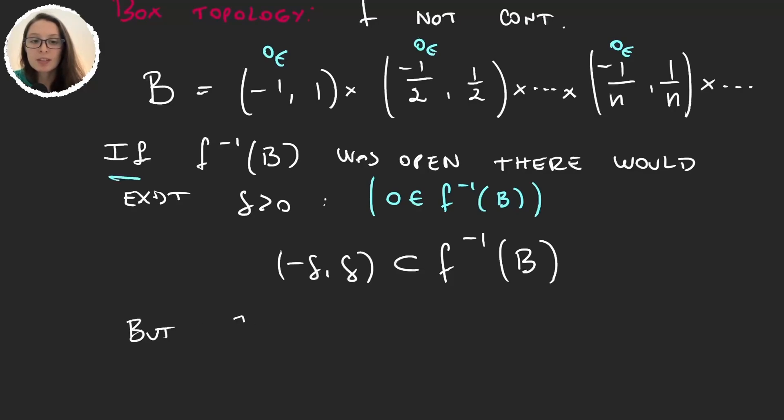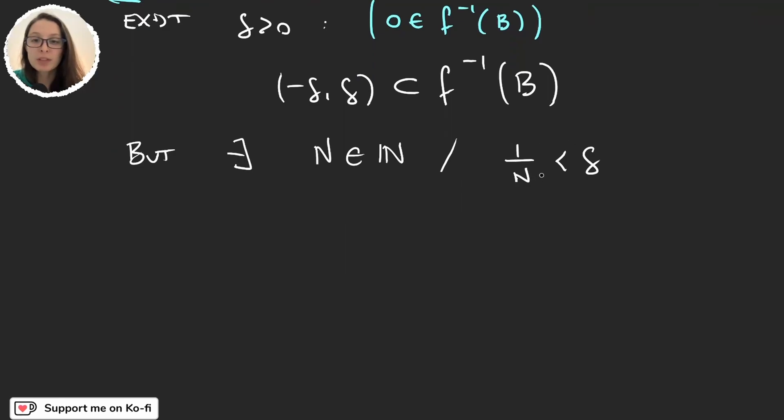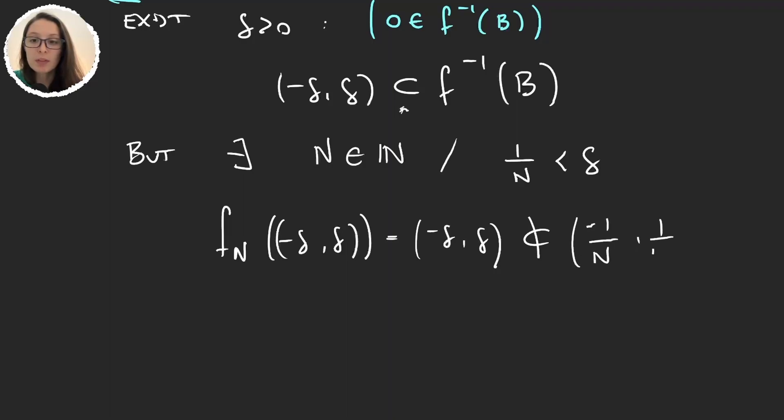But what happens is that there exists some natural number n, such that 1/n is smaller than δ. And here we are taking the infinite product of open sets, (-1/n, 1/n). So what happens is that when we reach this number n, then δ will not be a subset of (-1/n, 1/n). That's proving that this intersection cannot happen. So what we would write is f_n(-δ, δ) is obviously the identity, so it's going to be (-δ, δ). But (-δ, δ) is not a subset of (-1/n, 1/n), because 1/n is smaller than δ. So this is a contradiction.